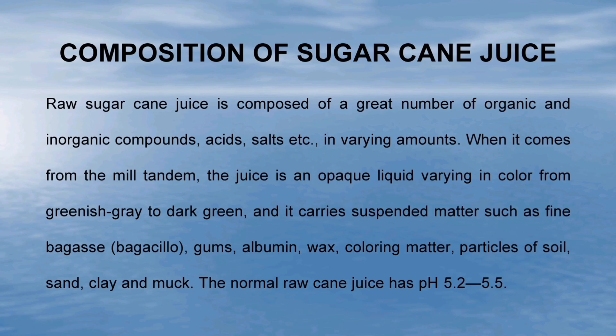Raw sugarcane juice is composed of a great number of organic and inorganic compounds, acids, salts, and other substances in varying amounts. When it comes from the mill tandem, the juice is an opaque liquid varying in colour from greenish grey to dark green, and it carries suspended matter such as fine bagasse, gums, albumen, wax, colouring matter, particles of soil, sand, clay and muck. The normal raw cane juice has pH 5.2 to 5.5.